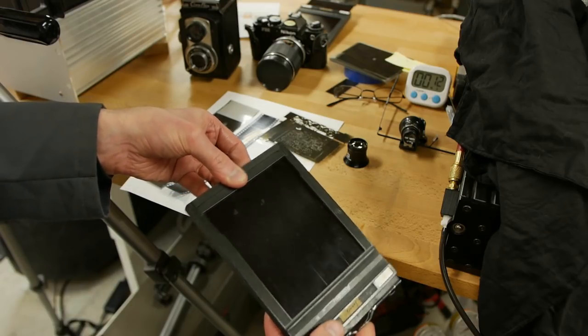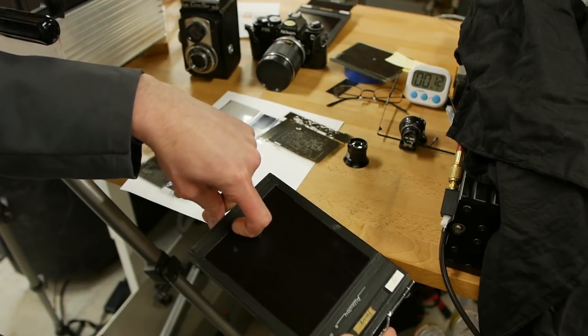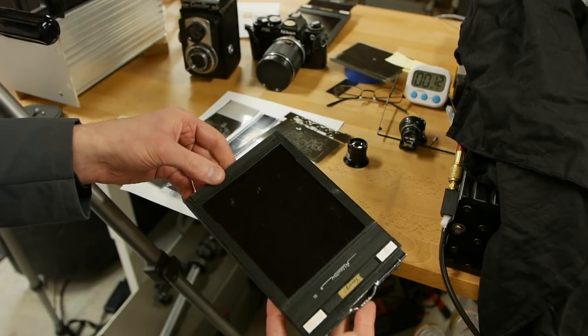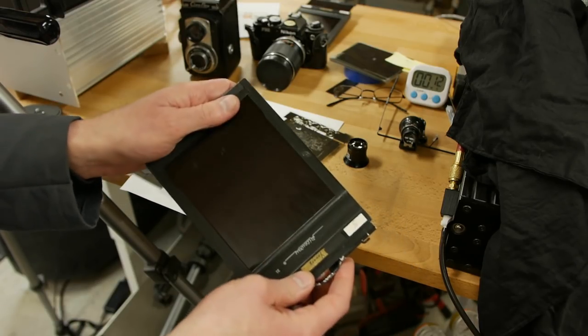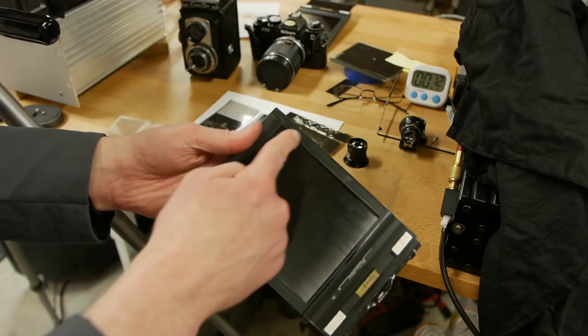And then when you close the shutter, it fits into a lock here so that you can't unhinge that again. So it's totally safe now. And then when you slide this into the camera, it's now light tight around the outside.